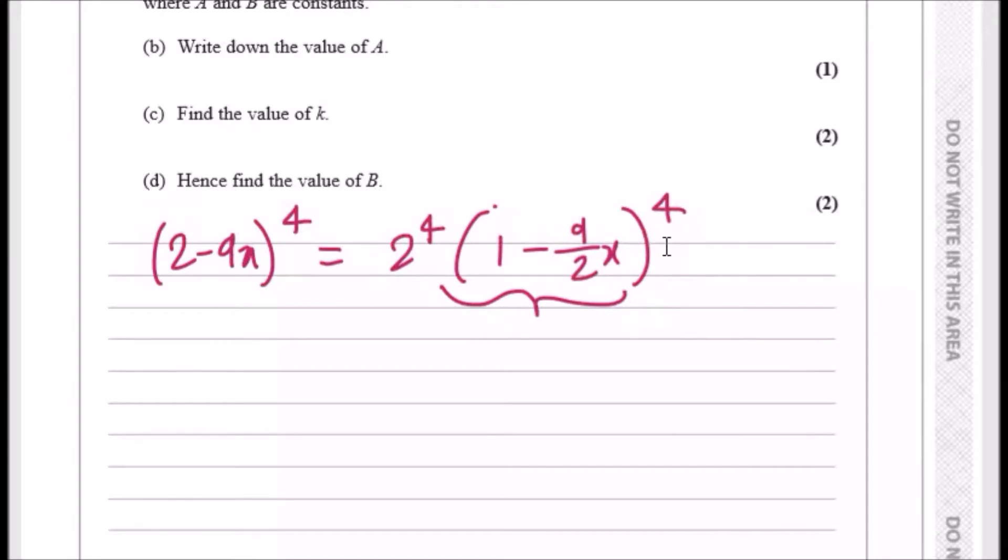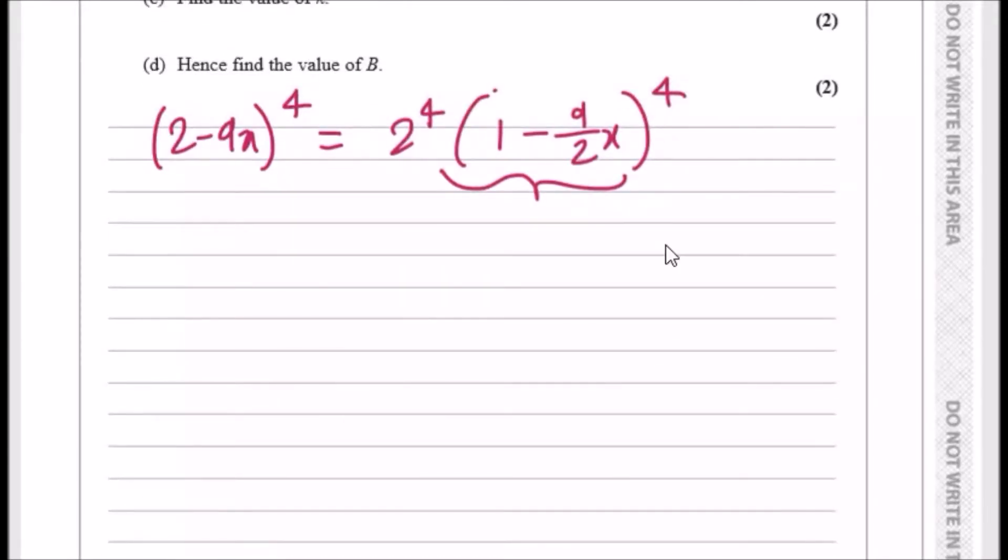Now this is what we're going to actually expand. Let's do it. So expand this, take 2 to the power 4 outside, expand this one using the general term. It's going to be the first term, 1, plus the power multiplied by the term here. It'll be 4 times minus 9 over 2x.